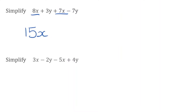Now for our terms of y, we have positive 3y but then we have negative 7y. So in this case, we've got positive 3y and we've got to take away 7 lots of y. So 3 take away 7 is actually going to give us negative 4 lots of y. Our final expression for that would be 15x take away 4y.